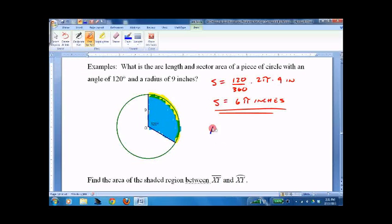And the area. 120 over 360, pi, 9 inches squared. It's one third. It's 27 pi inches squared.